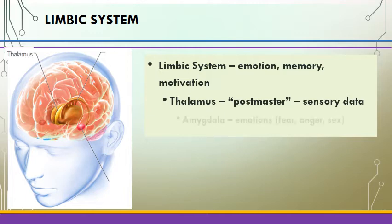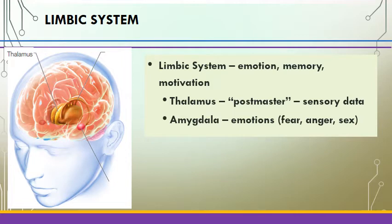Another key structure is the amygdala, which regulates emotions — particularly the survival-oriented emotions like fear that might keep us alive in a dangerous situation, anger that might help us defend ourselves, but also emotions related to sexual reproduction.